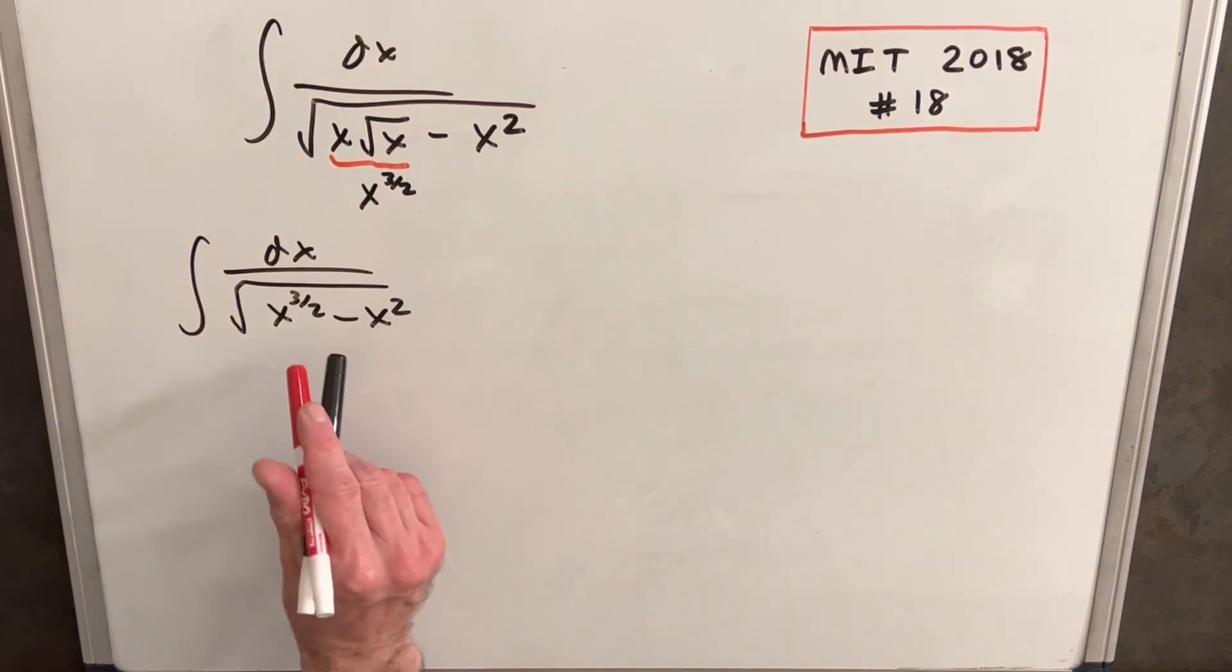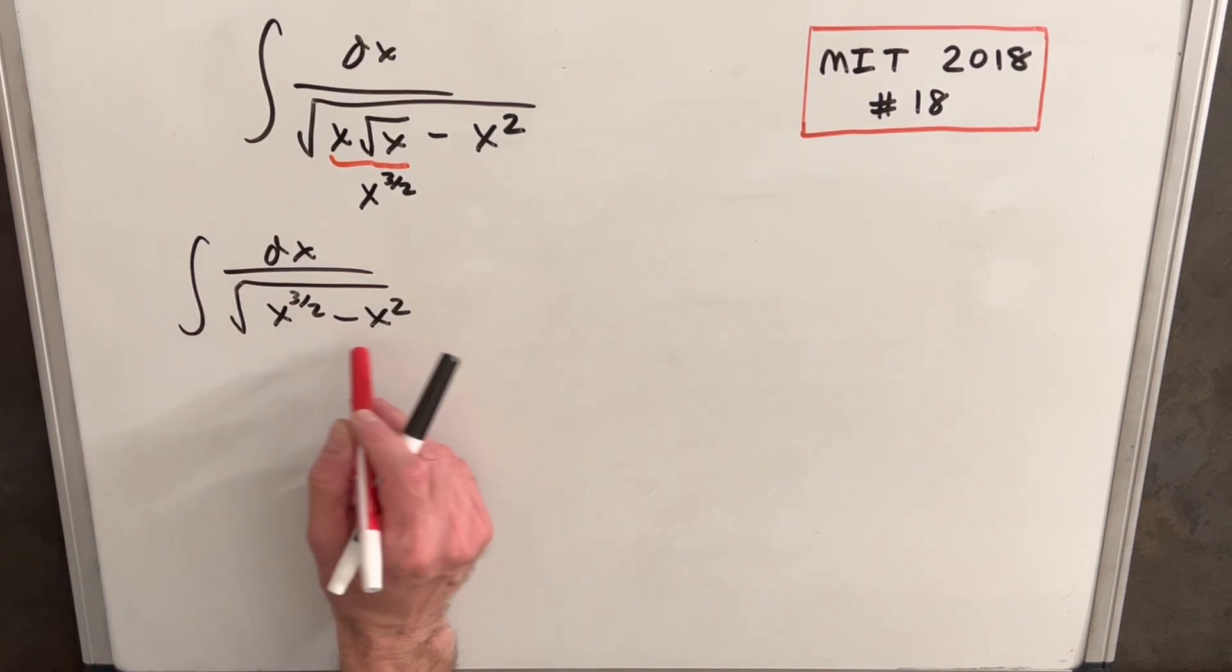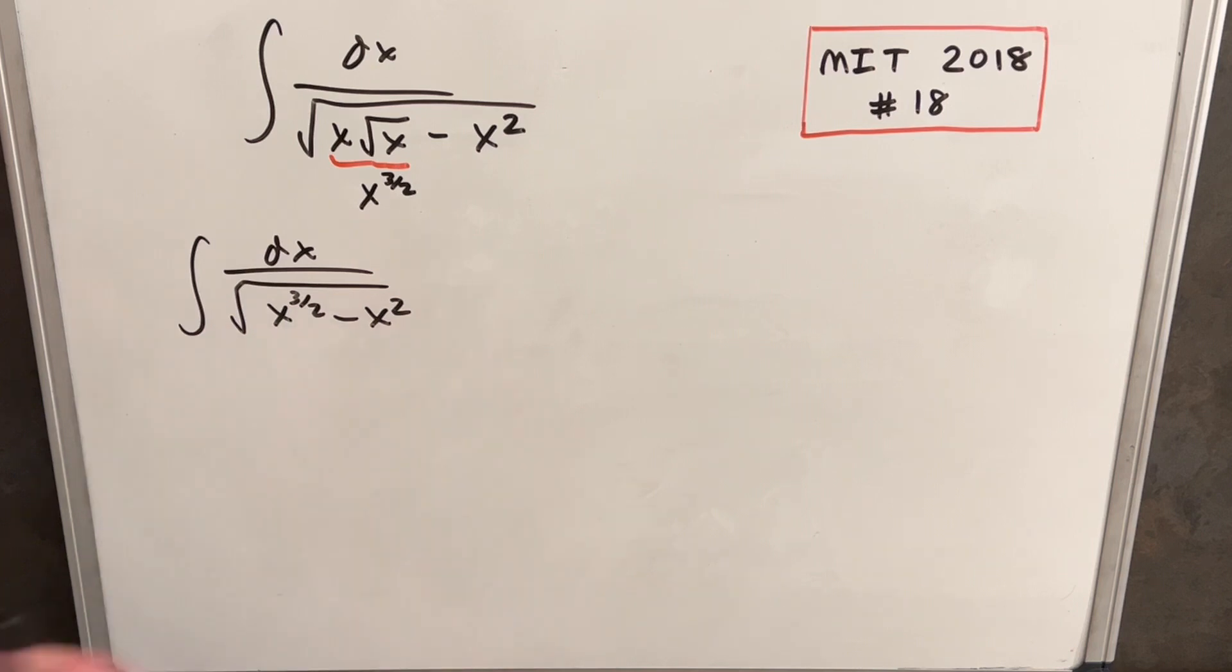The trouble we have now is we don't really want two x's here. Everything like if we're going to do trig substitution or u substitution, we almost always want to have just one x. And so we want to factor something out.